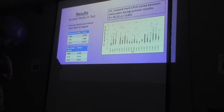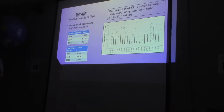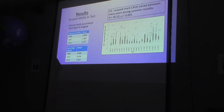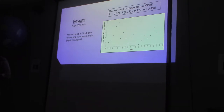The second part of hypothesis 2 looks at variation in catch per unit effort between years. The Kruskal-Wallis H test determined that yes, there has been variation between years. Years in which catch per unit effort was lowest during summer months were 2006, 2007, and 2010, while 2008, 2015, and 2016 had the highest catch per unit effort. The last part of hypothesis 2 — looking at whether there's been a trend in catch per unit effort over time during summer months — found no trend over time.